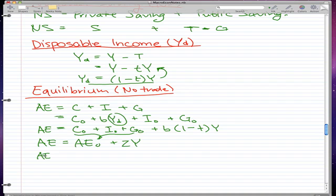I could say that AE0 is equal to C0 plus I0 plus G0. And similarly, I could say that Z is equal to b times 1 minus t because while we still have our Ys and all that changes, now we expanded our Yd to 1 minus t. So then this is essentially our Z.